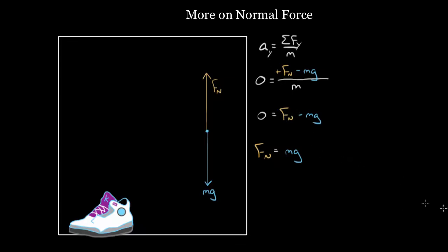What if we just added another force? What if we let the shoe sit on the ground and I push down on it? I'm pushing down with a force — I'll call it F1 — a force of magnitude F1 pointing downward. How would that change things? The acceleration is still zero; let's say the shoe is still just sitting there, so we don't have to change the left-hand side. That's still zero.